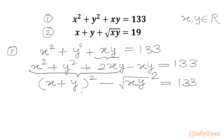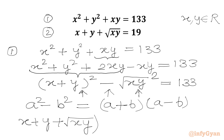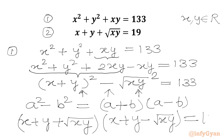Now we have one square and another square with a minus sign in between. We can apply the difference of two squares formula: a squared minus b squared equals a plus b times a minus b. Applying this gives us x plus y plus square root of xy, times x plus y minus square root of xy, equals 133.